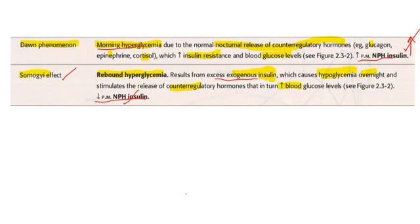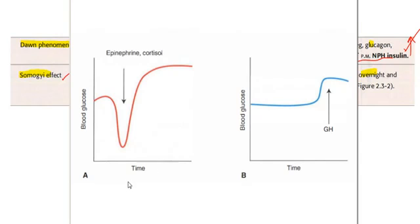Let me give you another example. Here is the blood glucose level, which is going down, so there will be a rebound hyperglycemia from those counter-regulatory hormones. They are increasing the blood glucose level. And here, glucose is already hyperglycemic — morning hyperglycemia. So here, counter-regulatory hormones are increasing the blood glucose level.